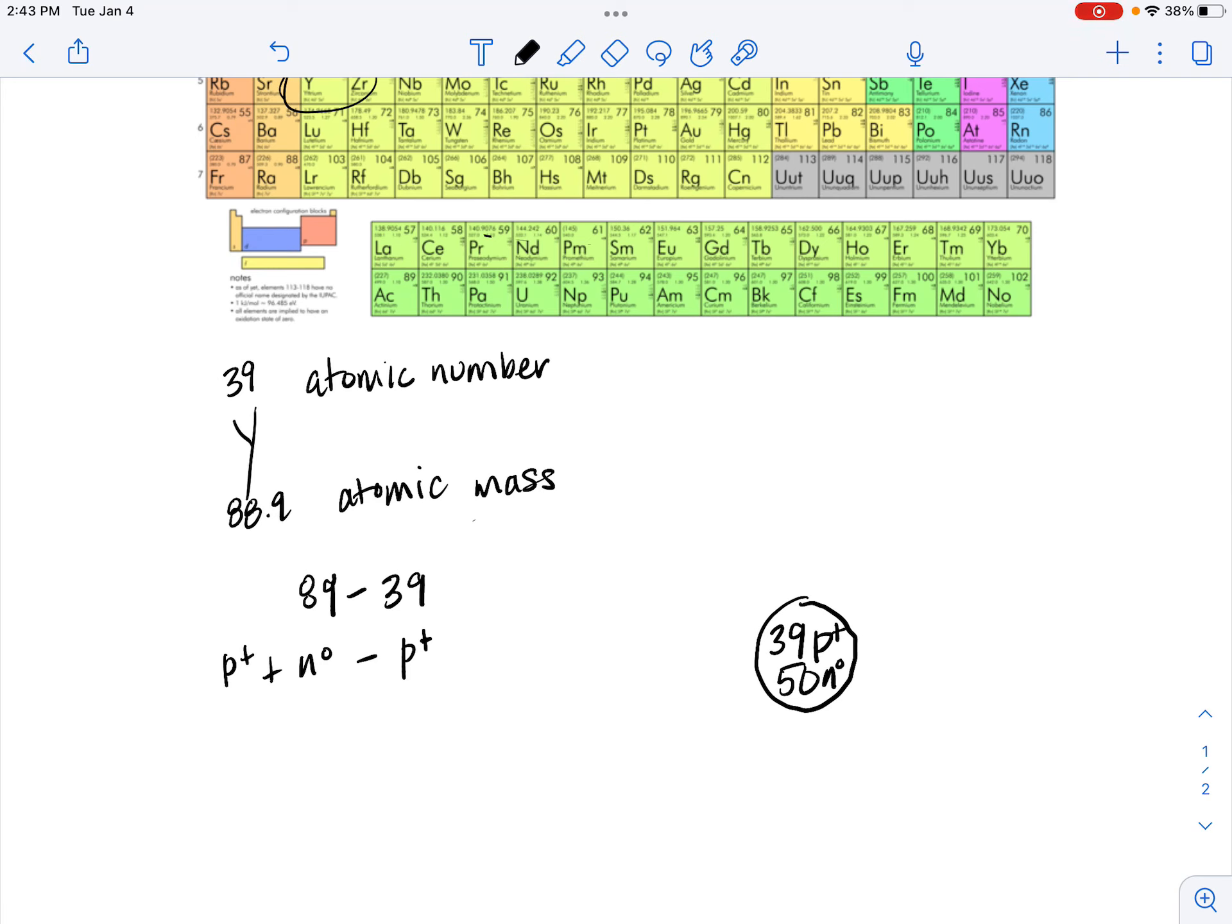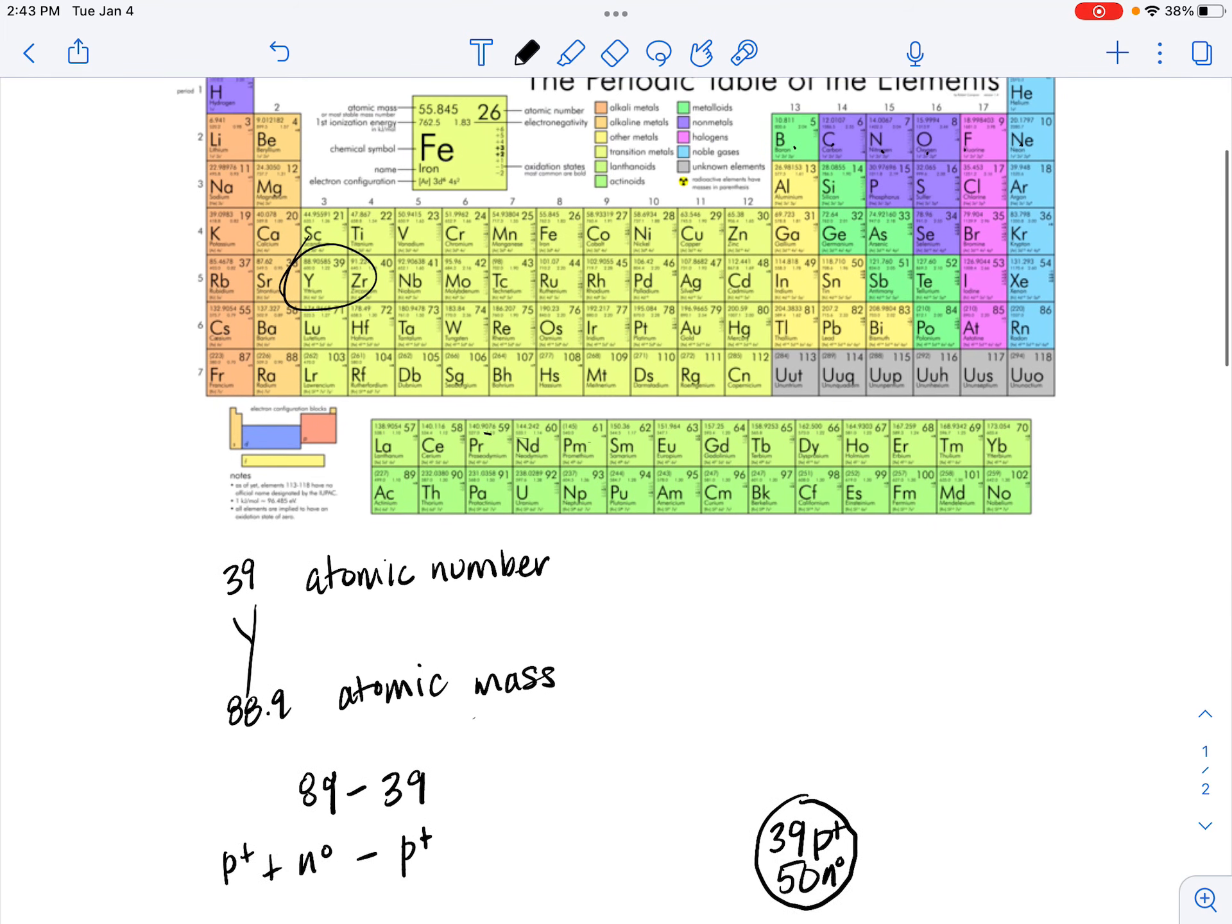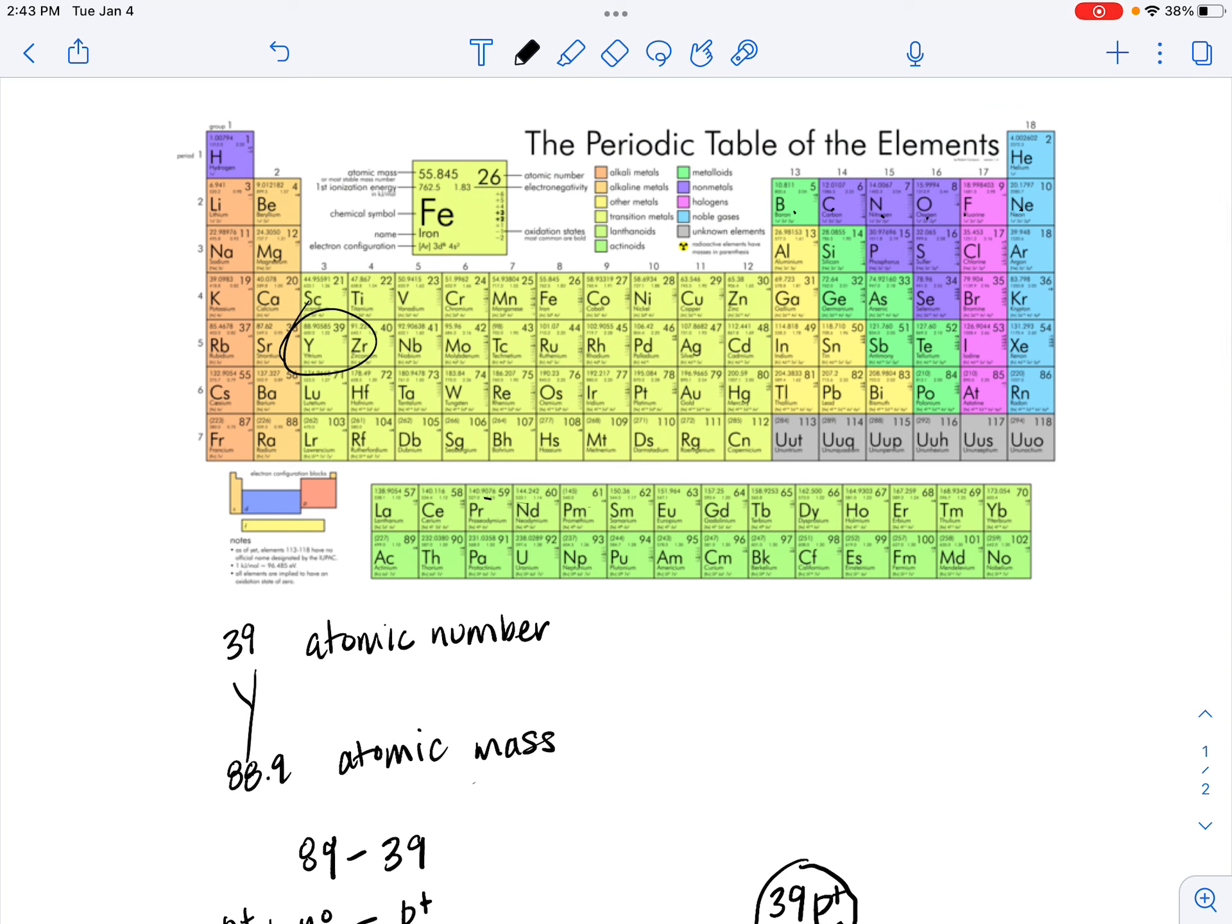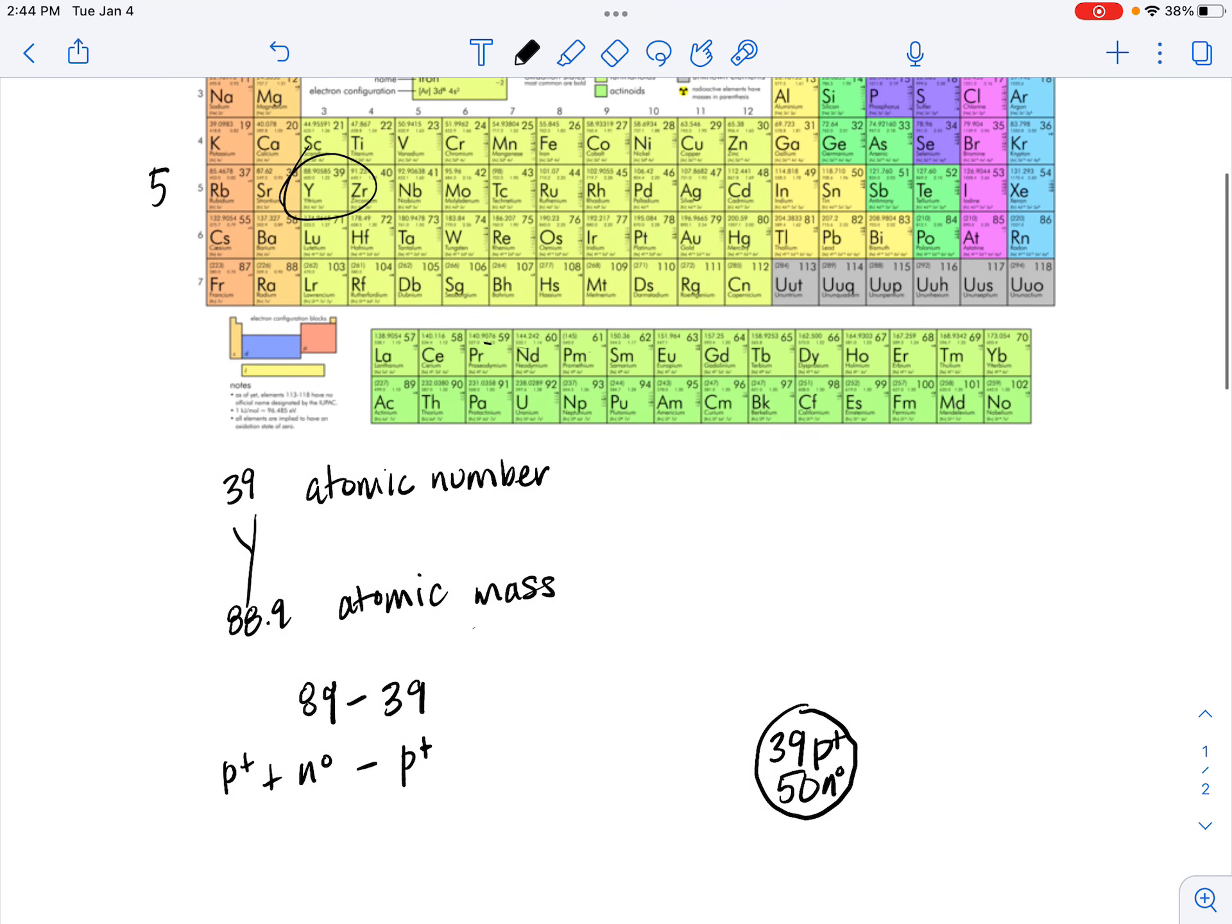Now to determine the number of electrons, we can assume that this is a neutral atom, which means the number of protons is equal to the number of electrons. We can also use the periodic table to determine how many energy levels a yttrium atom has based on which row it resides in.